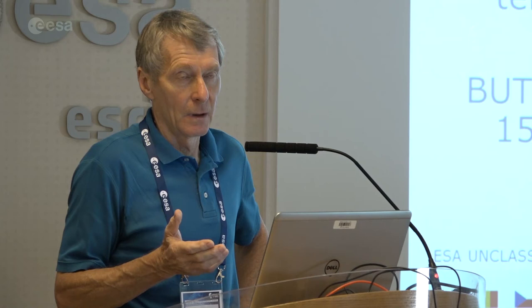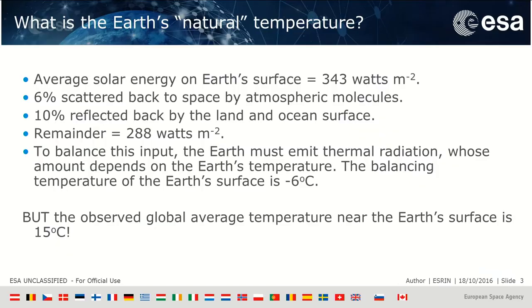If we ask ourselves, what's the Earth's natural temperature? If we stripped away greenhouse gases and just had an atmosphere composed of the current mix of nitrogen — about 78% — and oxygen — about 21% — you can calculate this by black-body radiation calculations and by the amount of radiation impinging on the Earth from the sun. Under those circumstances, the average temperature of the Earth would be about minus 6 degrees. But in fact, the average observed temperature is about 15 degrees — so there's a huge difference between what you'd expect from a balanced black body and what we actually see.